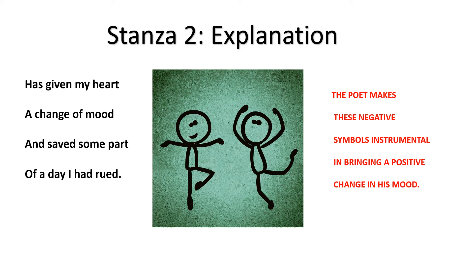This event allowed him to see life from a different angle. It is ironic that a creature linked with negative aspects of life should become a harbinger of positive change. The expression 'a day I had rued' basically means that the poet's melancholic mood had spoiled his day by making it dull, dreary and sad. But this depressed mood is uplifted when snowflakes fall on him and a crow becomes the reason for bringing this transformation, or upliftment, in his mood. The poet makes these negative symbols instrumental in bringing a positive change.